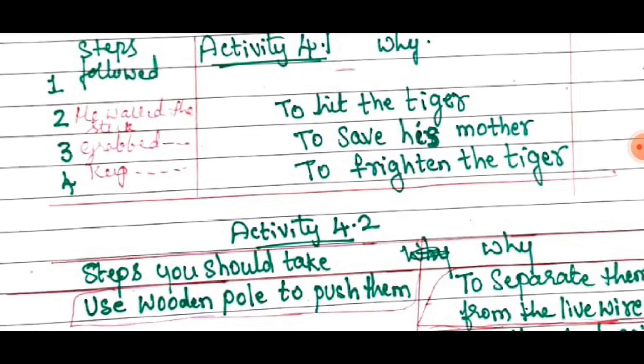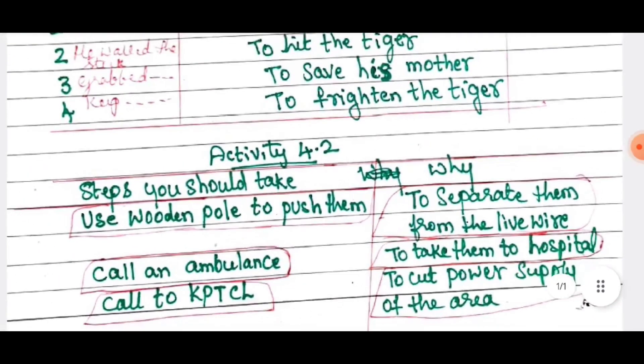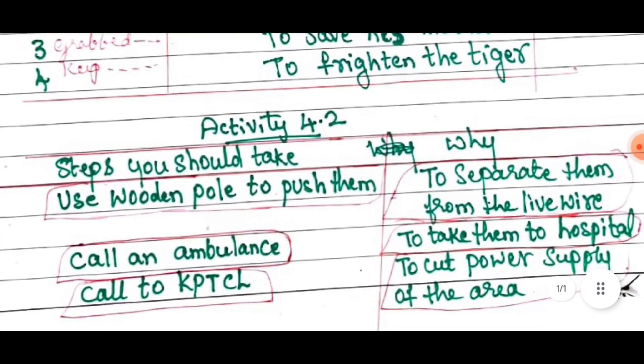Then activity 4.2. One situation — what steps would you take? Steps you should take: use a wooden pole to push them, to separate them from the live wire. After that, call an ambulance to take them to hospital. Call KPTCL to cut power supply of the area.